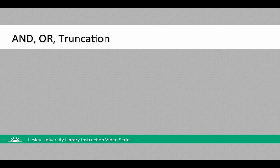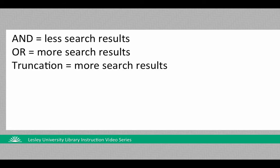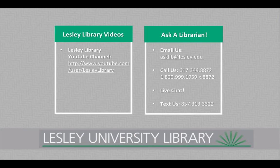To review: you can use AND to narrow your searches, while you can use OR or truncation to broaden your searches. You want to use a mix of ANDs, ORs, and truncations in your searches in order to retrieve the best results. Don't forget to be flexible with your keyword choices. And remember, if you need help, don't hesitate to ask a librarian.